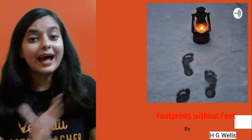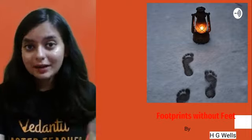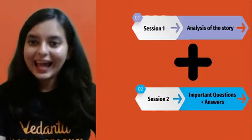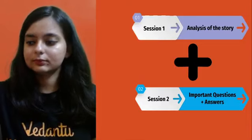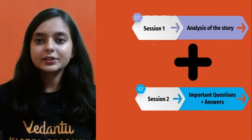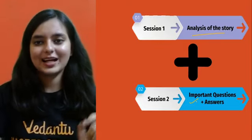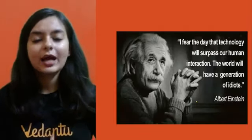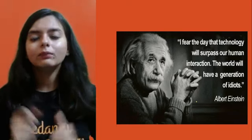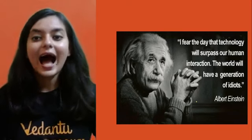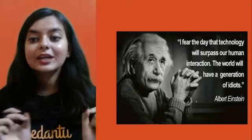We will analyze at the end of the lesson whether we would also like to do the same as Griffin. In the first session today, we are going to have an analysis of the entire story, and the next session we will cover important question answers. Let us begin with a meaningful quote connected to the chapter: 'I fear the day that technology will surpass our human interaction. The world will have a generation of idiots.' — Albert Einstein.